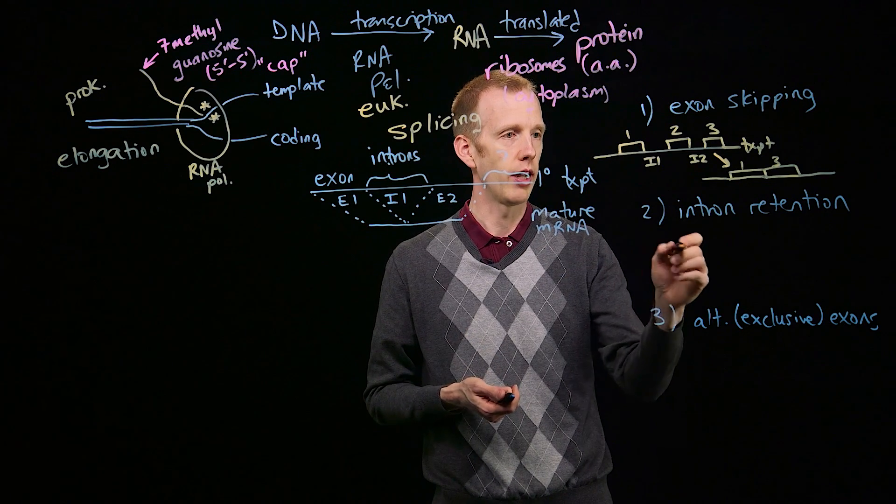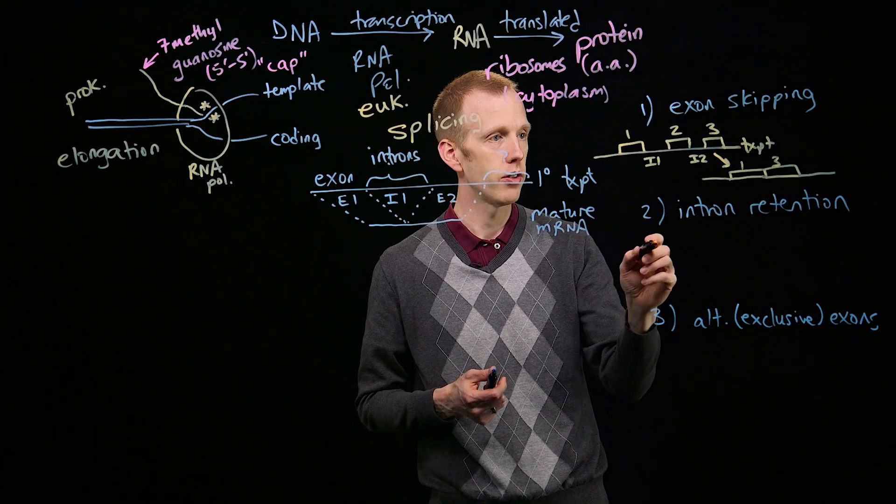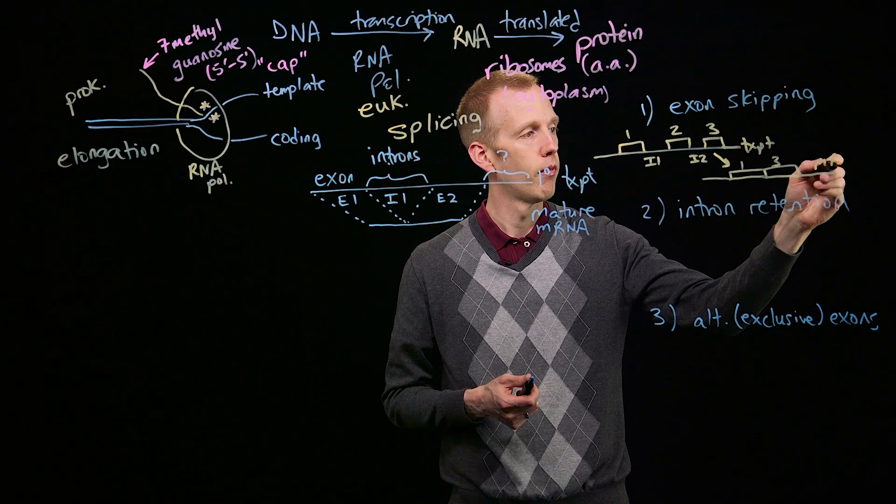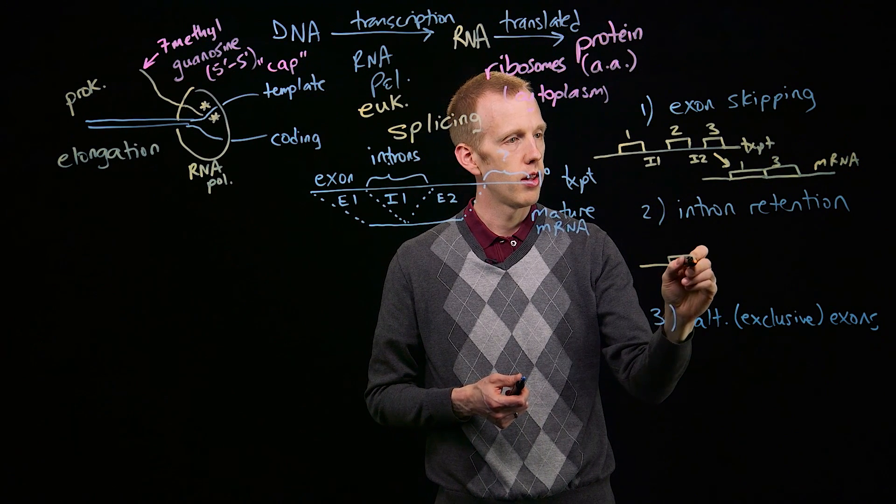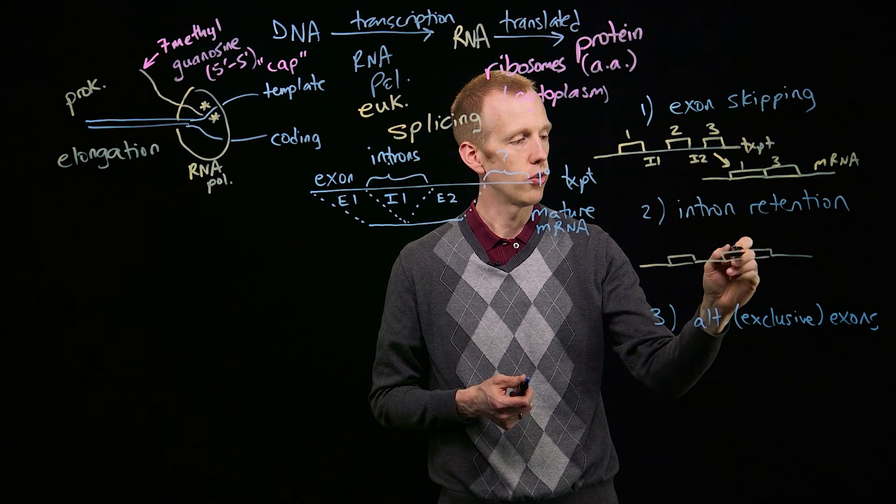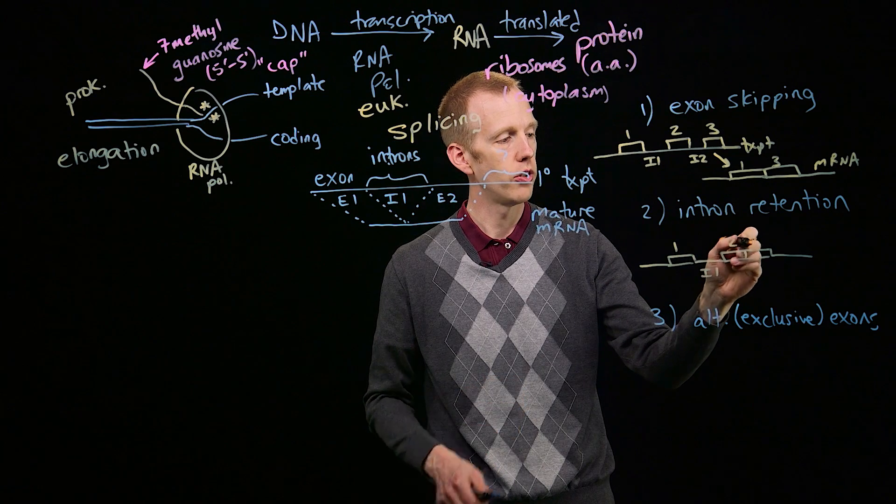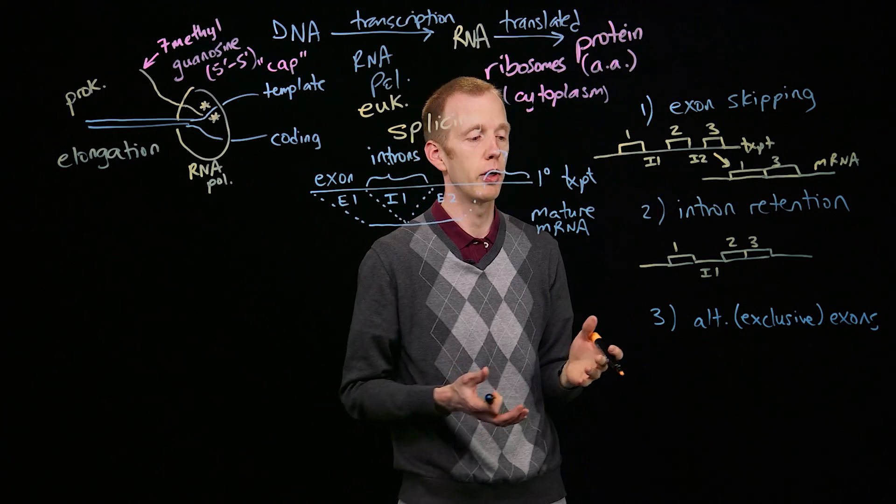Sometimes an intron will get left in, so if we start with the same initial molecule, 3 exons and 2 introns, we might find a mature messenger RNA that still has intron 1. So it's got exon 1, exon 2, exon 3, but now an intron has been retained, not all of the introns have been removed.